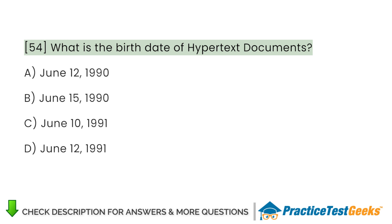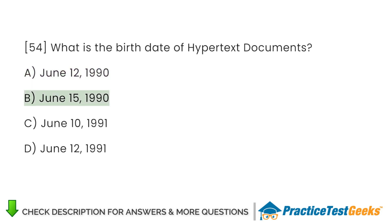What is the birth date of hypertext documents? A. June 12, 1990. B. June 15, 1990. C. June 10, 1991. D. June 12, 1991.